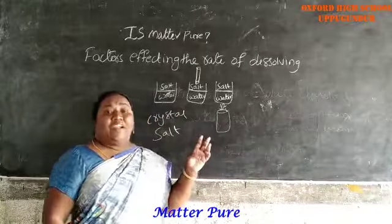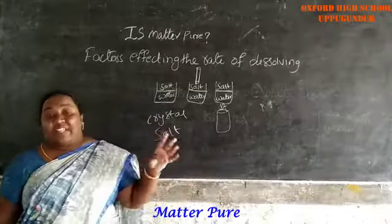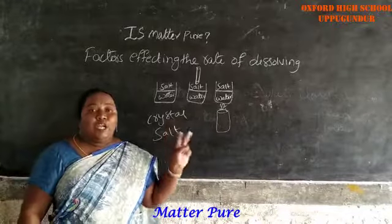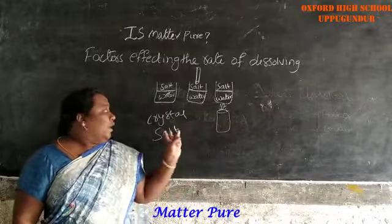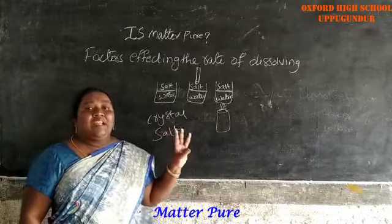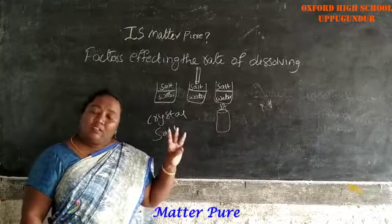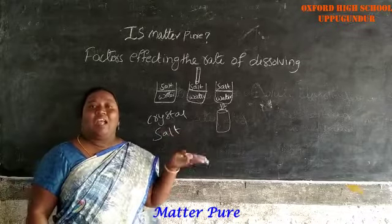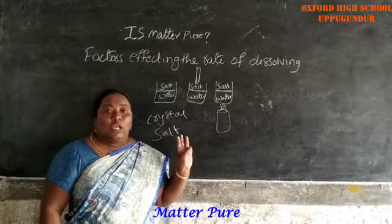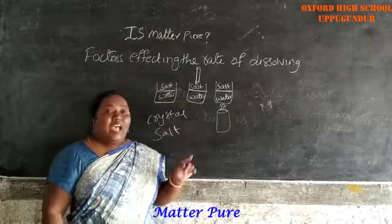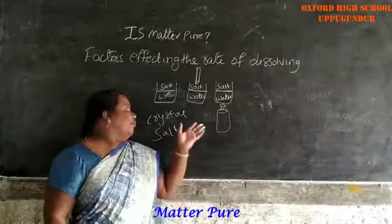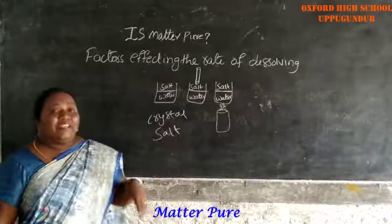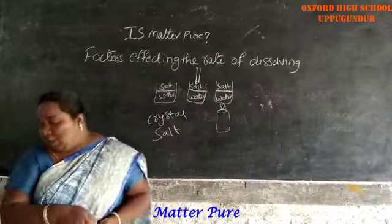So the three factors affecting the rate of dissolving are: number one — stirring; number two — temperature; number three — nature of the solute. These are the three factors affecting dissolving.